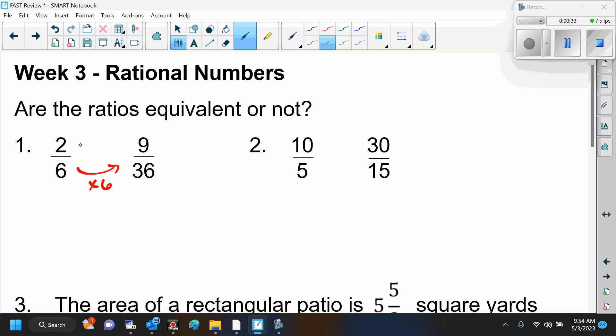And how do I get from 2 to 9? Times, oh, I can't get from 2 to 9, right? So if I multiply times 6 in the numerator, am I going to get 9? No. So what does that tell you about these ratios? These are not equivalent ratios.